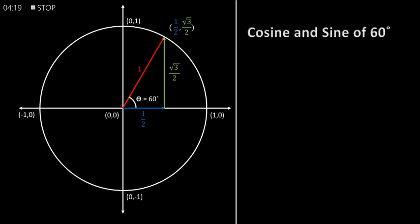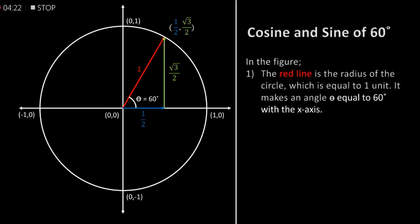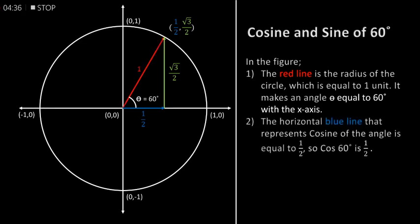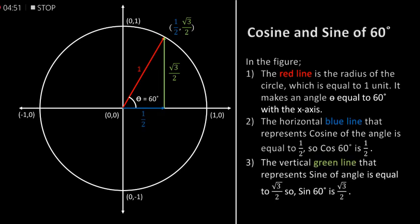Cosine and sine of 60 degrees. In the figure, the red line is the radius of the circle which is equal to 1 unit. It makes an angle theta equal to 60 degrees with the x-axis. The horizontal blue line that represents cosine of the angle is equal to 1 by 2, so cos of 60 degrees is equal to 1 by 2. The vertical green line that represents sine of the angle is equal to half of square root of 3, so sine of 60 degrees is equal to half of square root of 3.